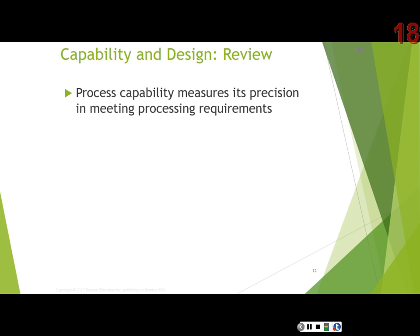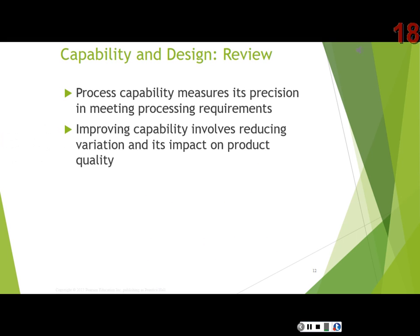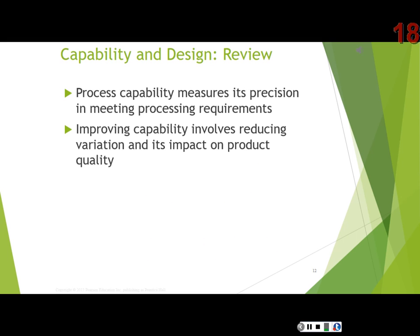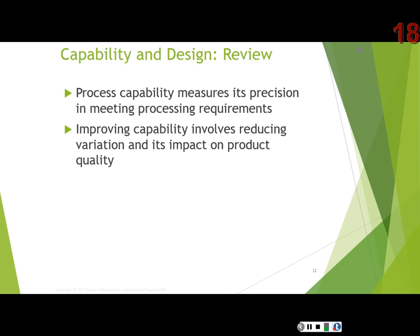When we say a process is in control, all we're saying is it's internally stable — we're not making assumptions about whether we'll meet customer demand. We're just saying the process can run consistently. When we get to the capability side, that's when we ask: can the process that's in control actually do what the customer needs? Improving process capability involves shifting the mean in the short run to match the customer mean, then in the long run reducing variability, which often requires investment.